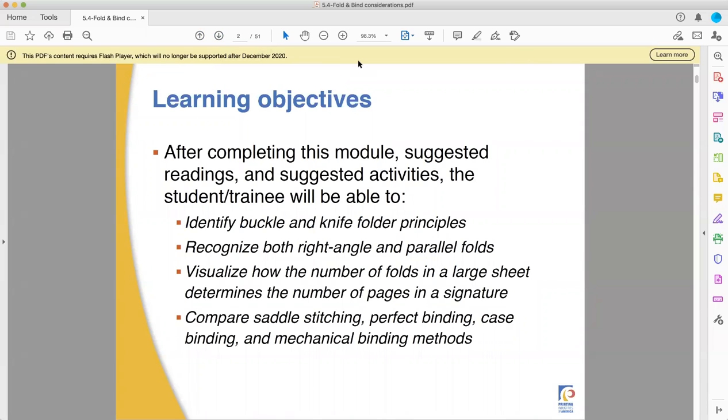Overall, we're going to look at the differences between buckle and knife folders. We're going to try and find the difference between right angle and parallel folds. We're going to visualize the number of folds in a large sheet and how that determines the number of pages you can put into a signature.